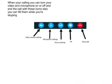When you're calling, you can turn your video and microphone on or off and end the call with these icons. Also, you can instant message them while you're Skyping. Here's the end call button, the instant message button, sound settings, microphone settings, and video and camera settings.